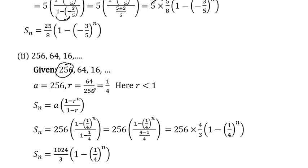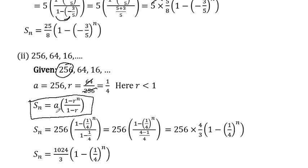For the next example, term 2 divided by term 1 is 64 divided by 2.36, giving r = 1/4. So the formula to use is a into 1 minus r to the power n, divided by 1 minus r. With n equal to a = 2.36 and r = 1/4.